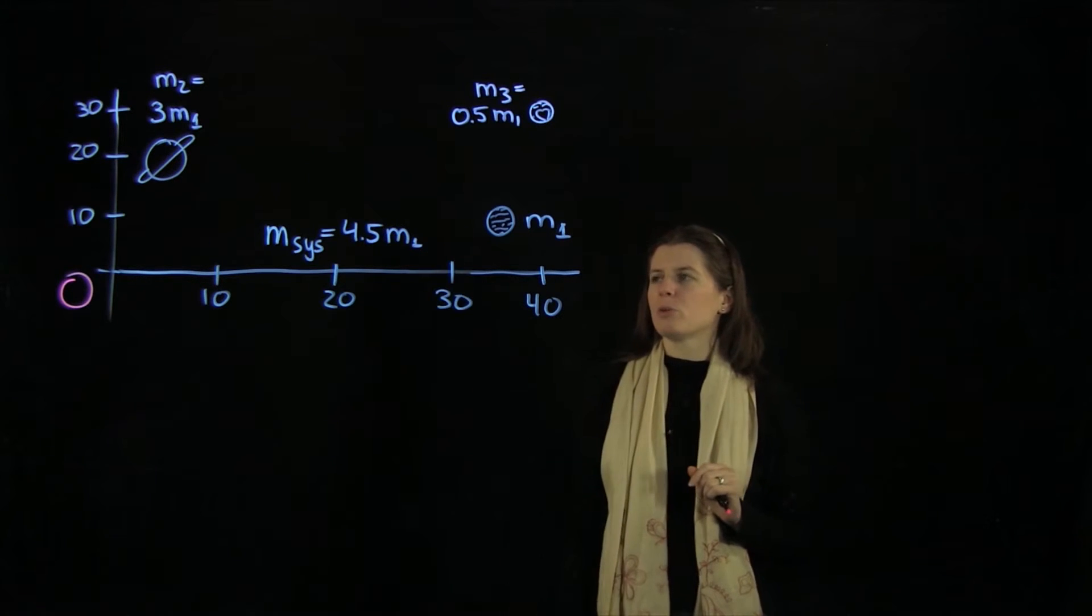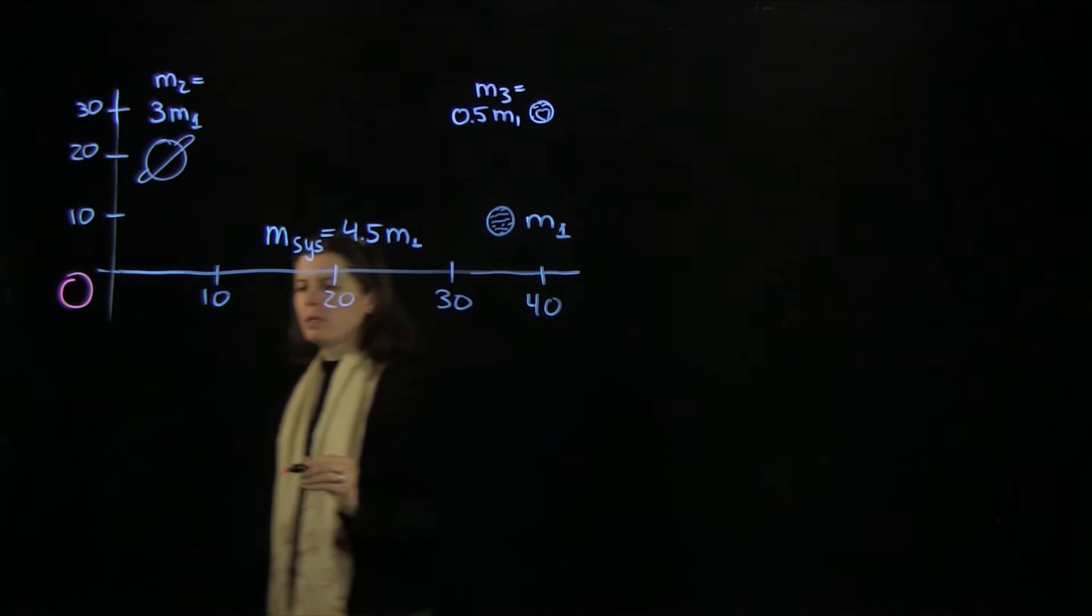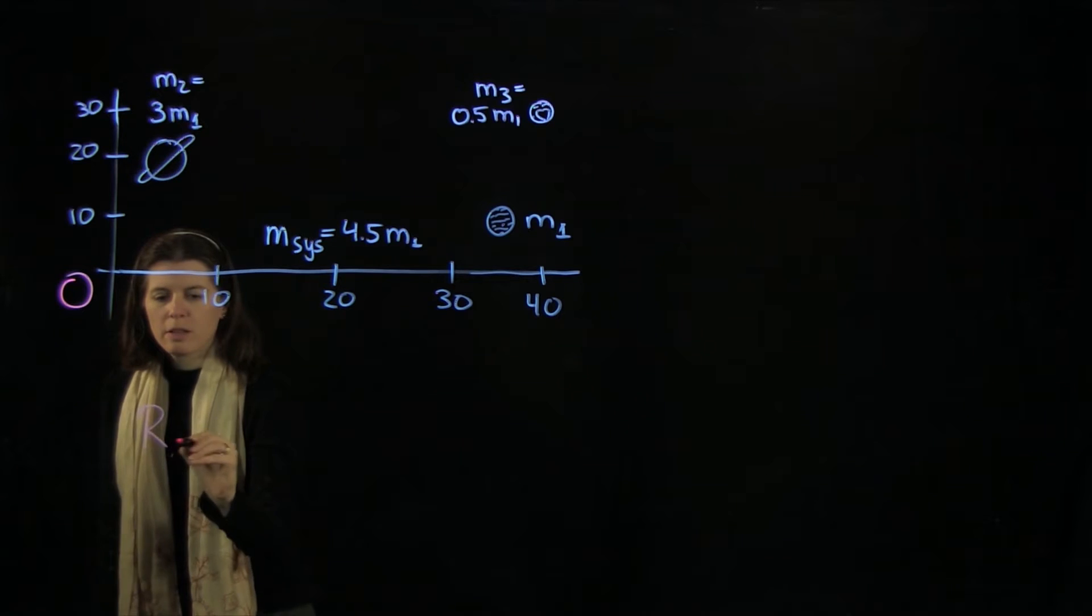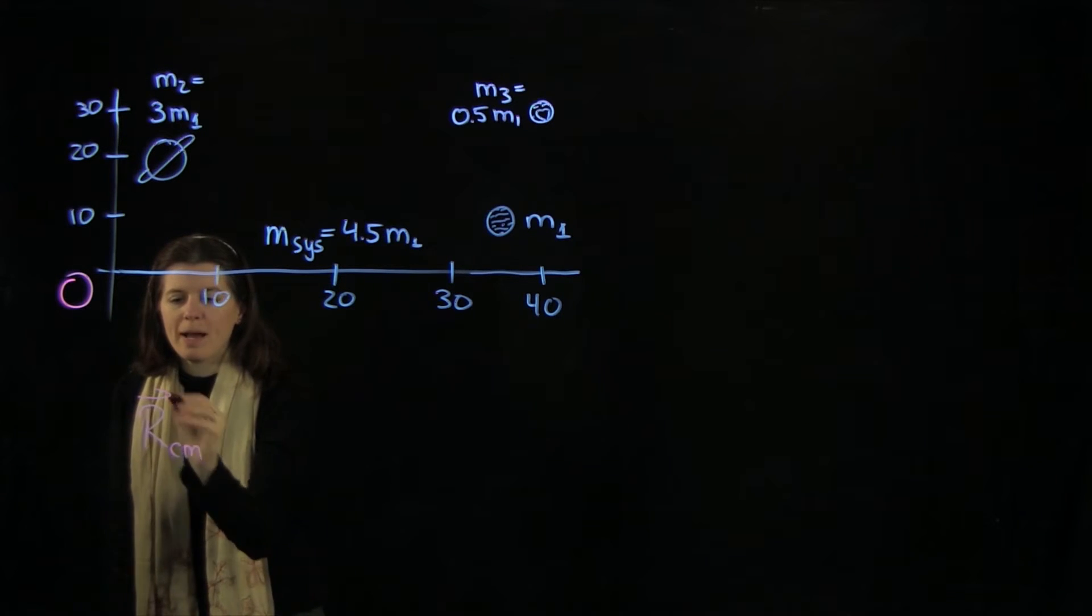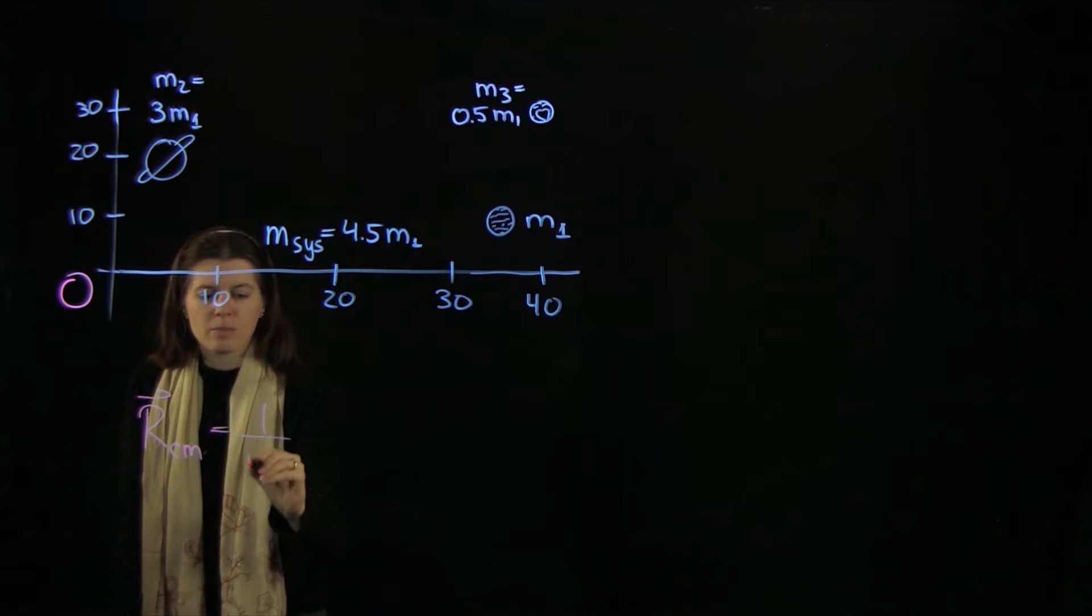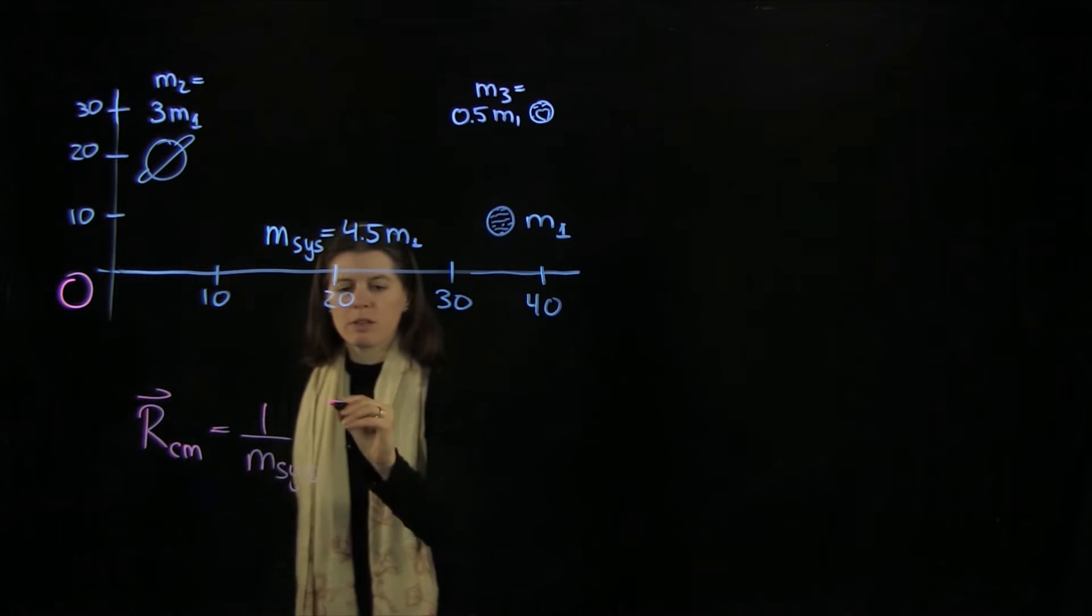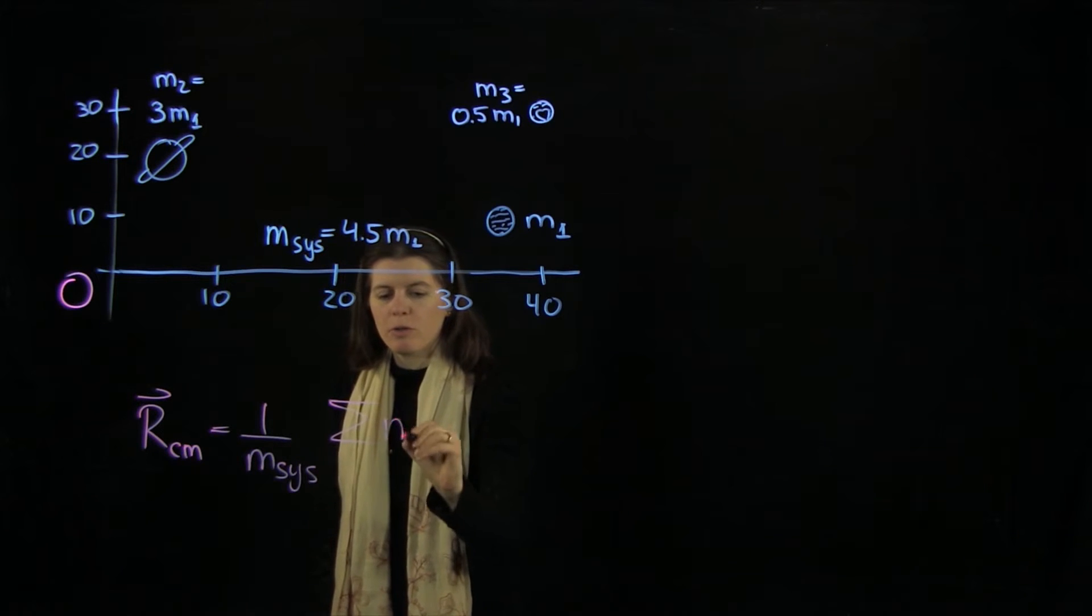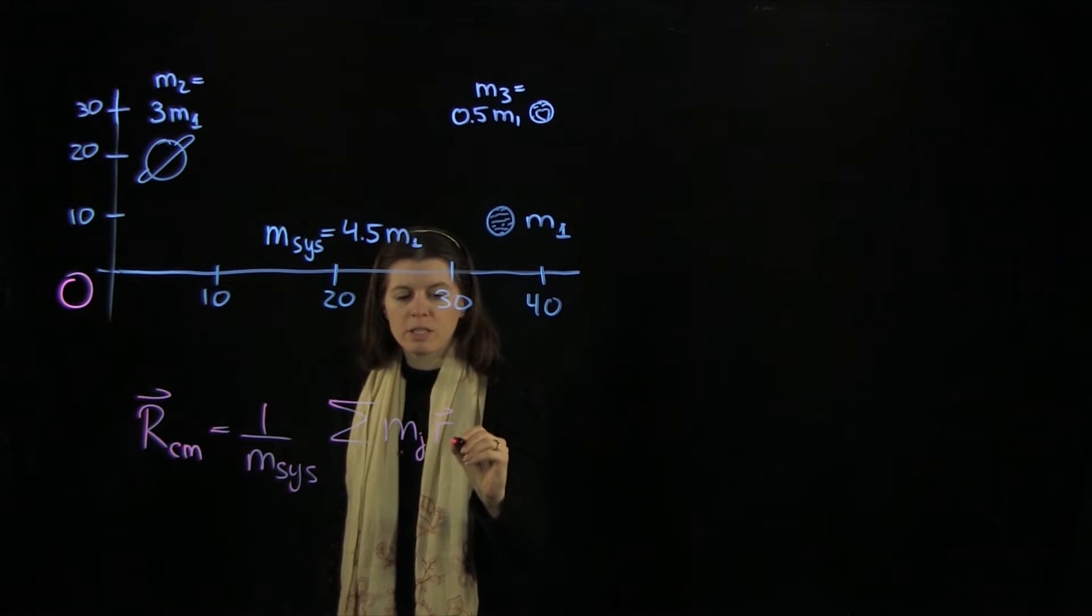The total mass is going to be 4.5 m1. If we want to calculate this position function of the center of mass, rcm, that is the mass weight here, and then we need the sum of all our masses times our distances.